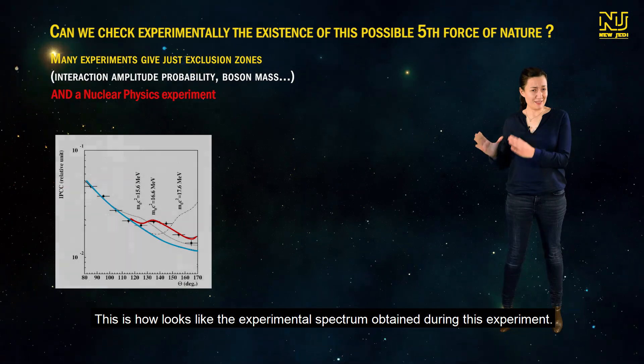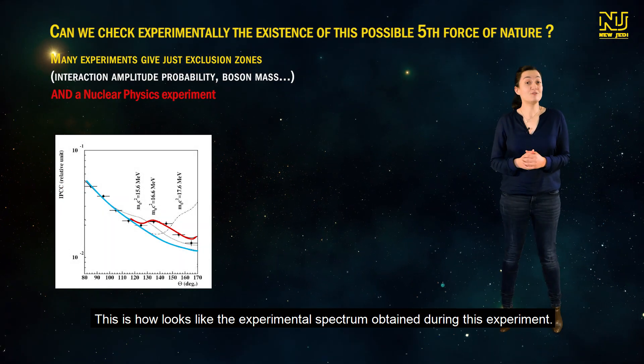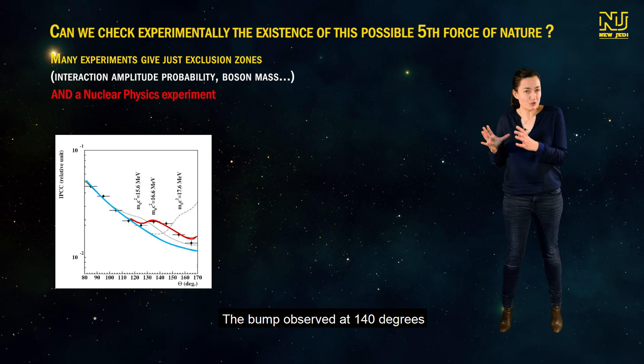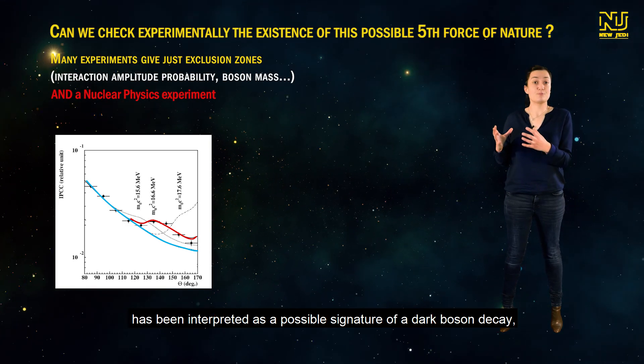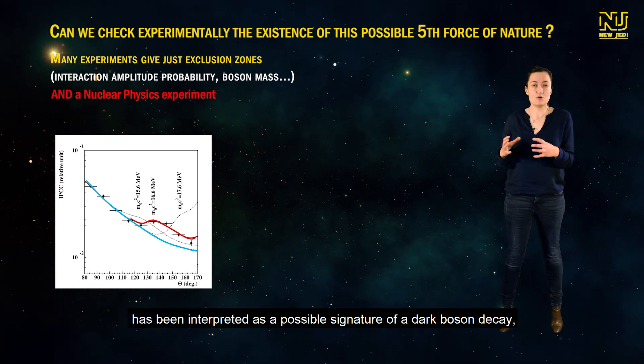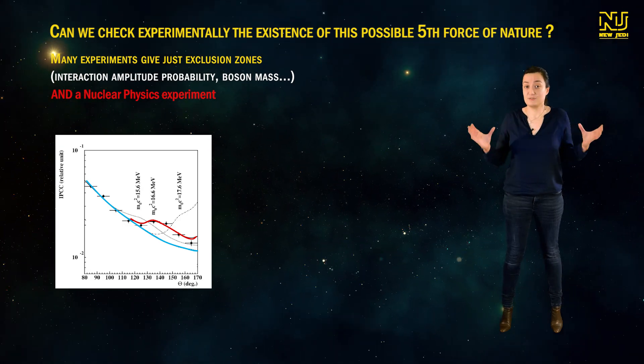This is how it looks like the experimental spectrum obtained during this experiment. The bump observed at 140 degrees has been interpreted as a possible signature of a dark boson decay that was named X17.